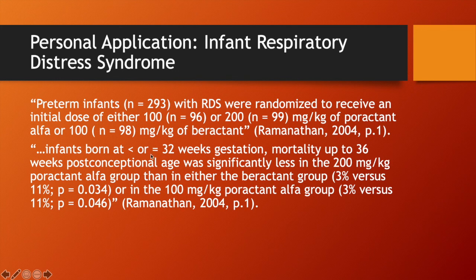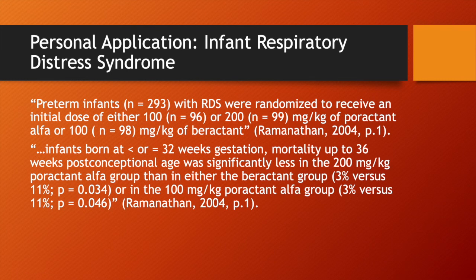The results showed that poractant from the pig was more effective than beractant from the cow. This was partly because a higher concentration — 200 mg/kg of poractant — could be administered, but also because the lower concentration group of 100 mg/kg poractant also showed better results compared to the beractant group. This study demonstrated the superiority of poractant.